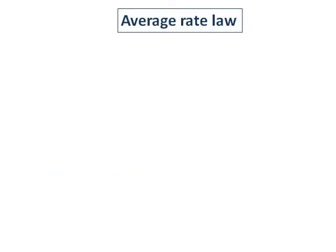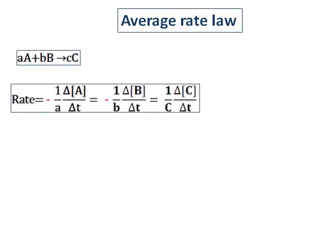The first rate law is the average rate law. This rate law talks about the average rate of a reaction from start to finish. Consider a reaction A combining with B, giving you the product C. The stoichiometry of the reactions are small a, small b, and small c. In the average rate law, the stoichiometry of the reaction is important. So the rate of the reaction is equal to 1 over a, times the change in concentration of A divided by the change in time.